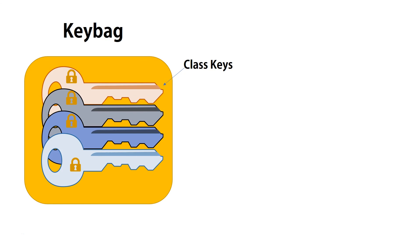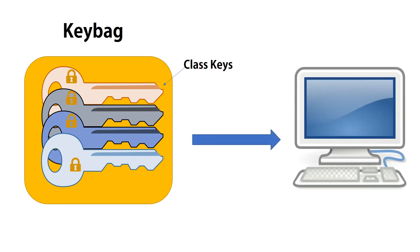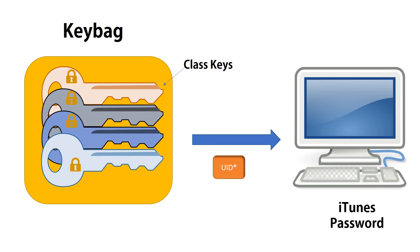When you back your phone up through iTunes, you have two choices: an encrypted backup where you choose a password in iTunes, or no encrypted backup. If you choose to encrypt your iTunes backup, then your class keys are encrypted without the unique ID and passed to iTunes.